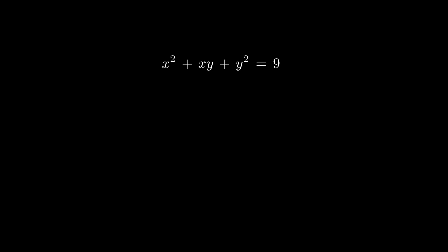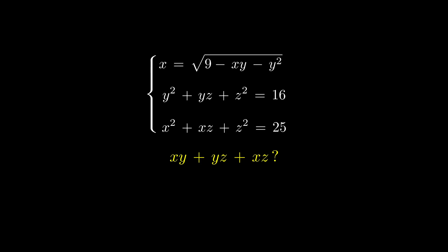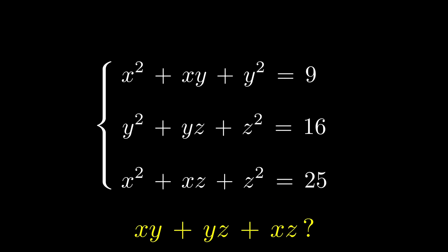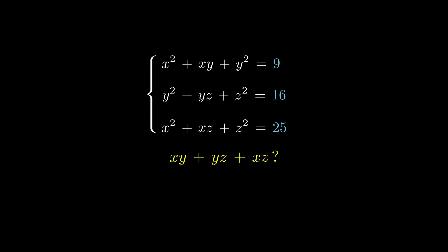We will demonstrate the sheer mightiness of geometric thinking in this video. The system looks complicated if we attempt any algebraic manipulations, and the trick here is to observe. These numbers look suspicious because they belong to a Pythagorean triangle — so it should be about triangles.